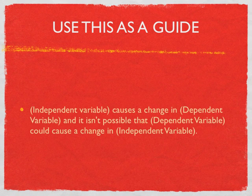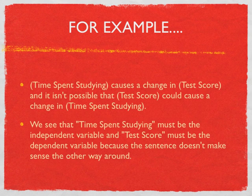Let me let you take this slide in for a minute. You might want to pause right here — I would write this down and take notes. This is going to really help you in the future to make sense out of all things in Social Work 300, Computer Applications. Time spent studying causes a change in test scores, and it isn't possible that the test score could cause a change in the time spent studying. So now you see that time spent studying must be the independent variable and test score must be the dependent variable, because the sentence doesn't make sense the other way around.